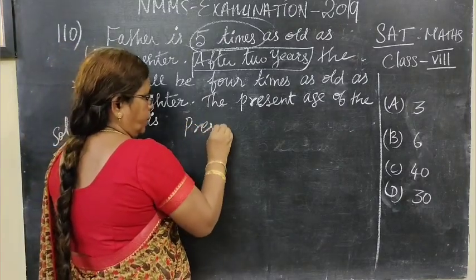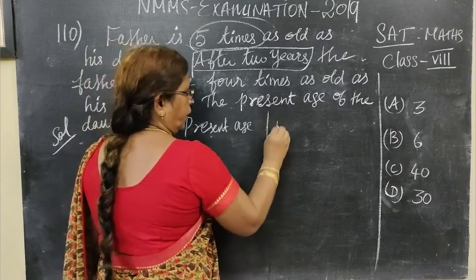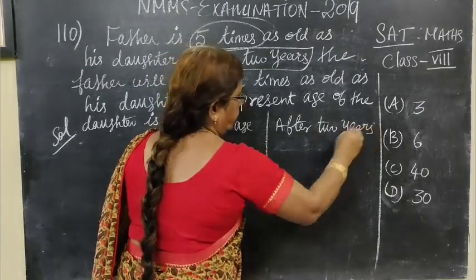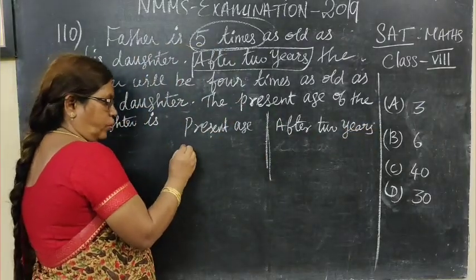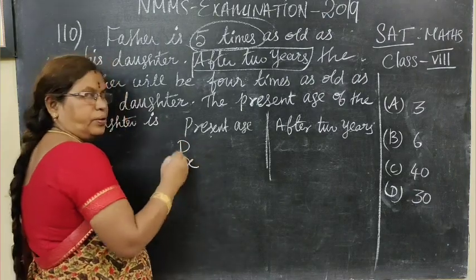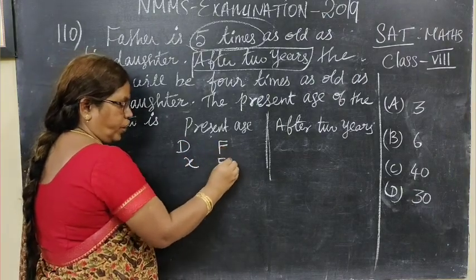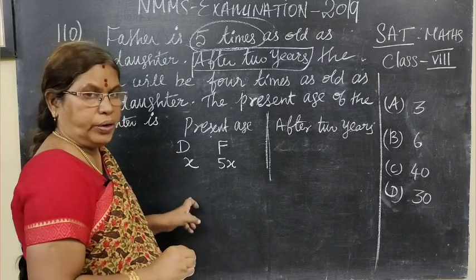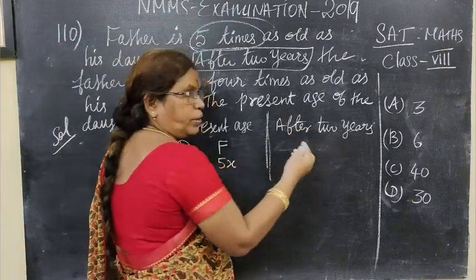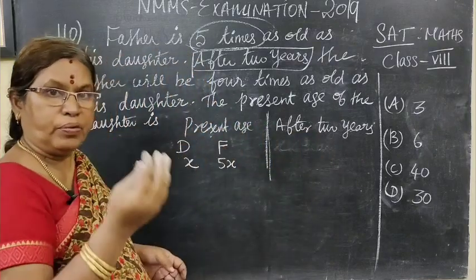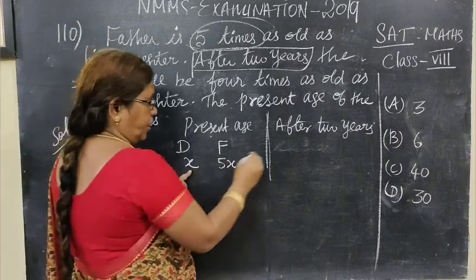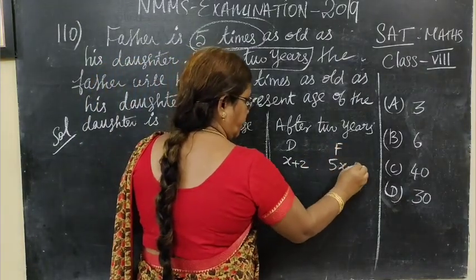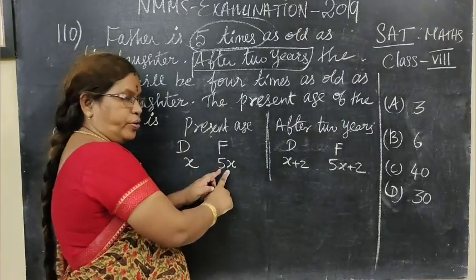Now let's set up the present age and after 2 years. The present age of the daughter is X years. The present age of father is 5X years, because it is given 5 times as old as his daughter. After 2 years: before means minus, after means plus. So daughter's age becomes X plus 2, father's age becomes 5X plus 2.